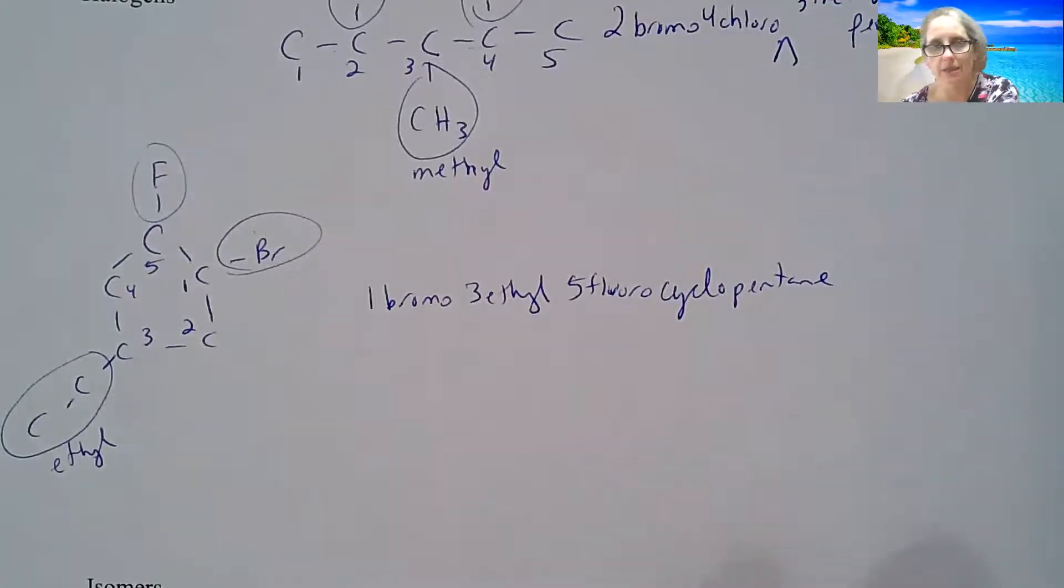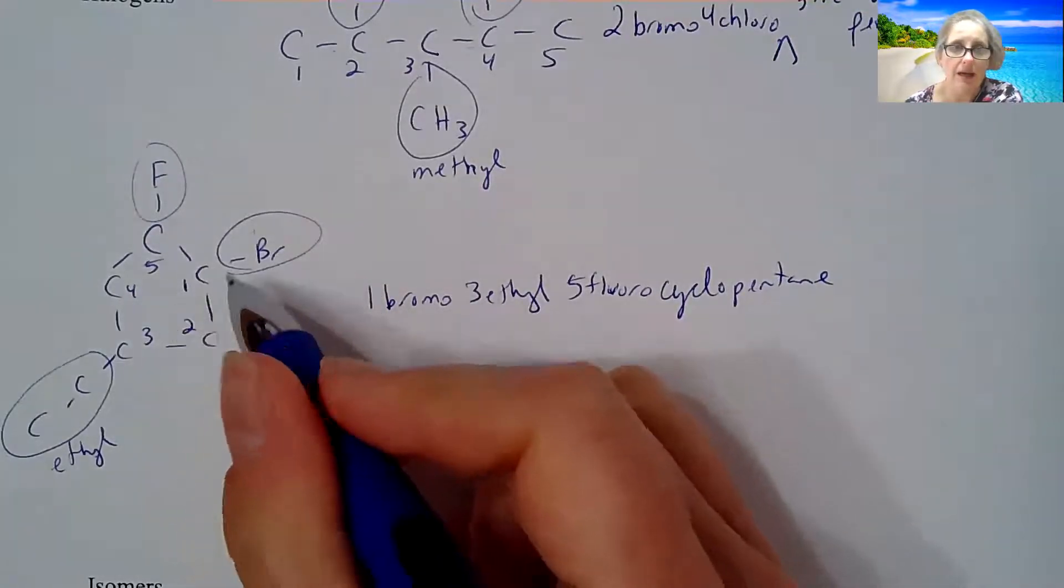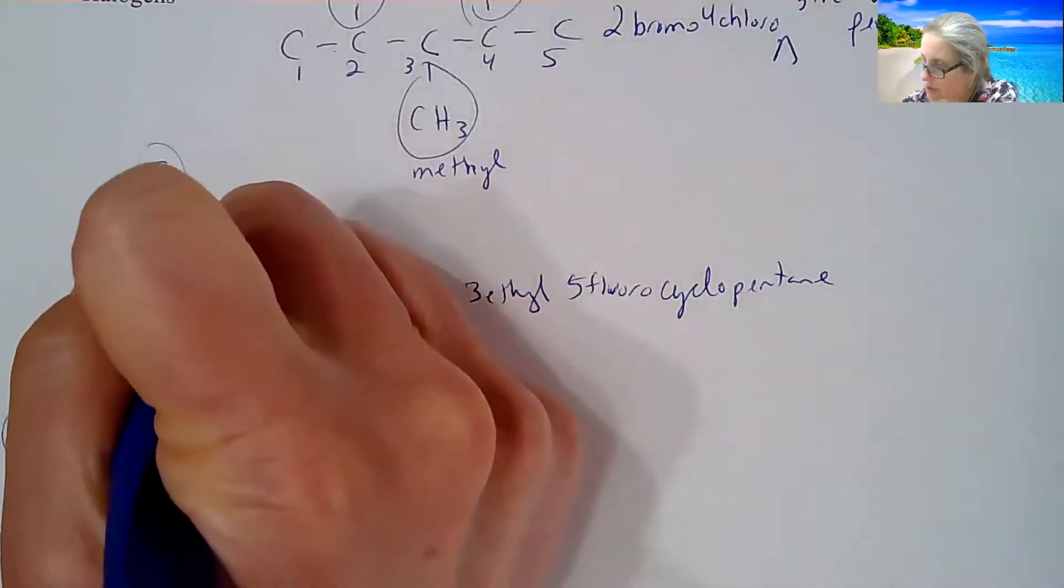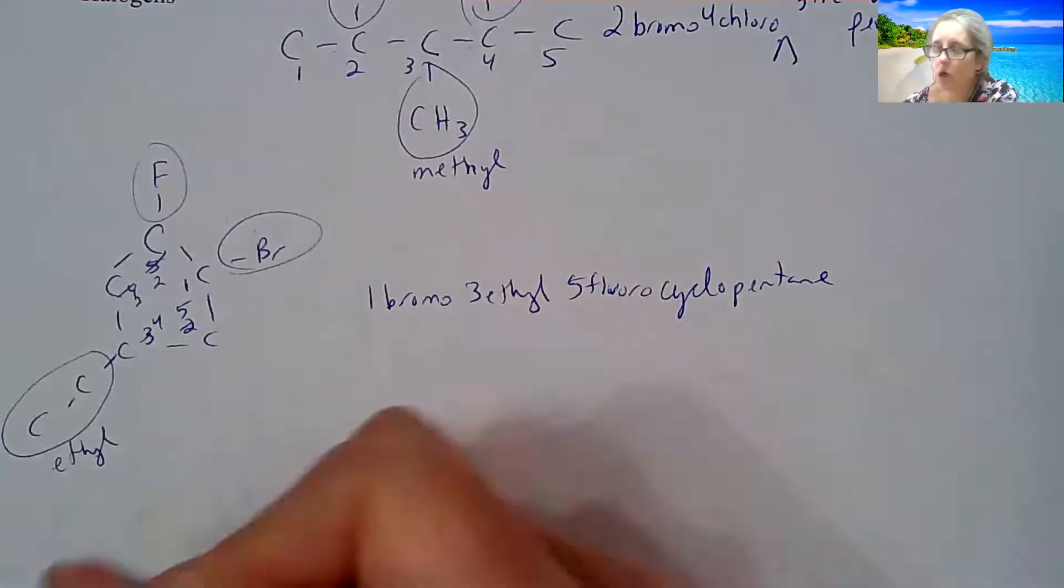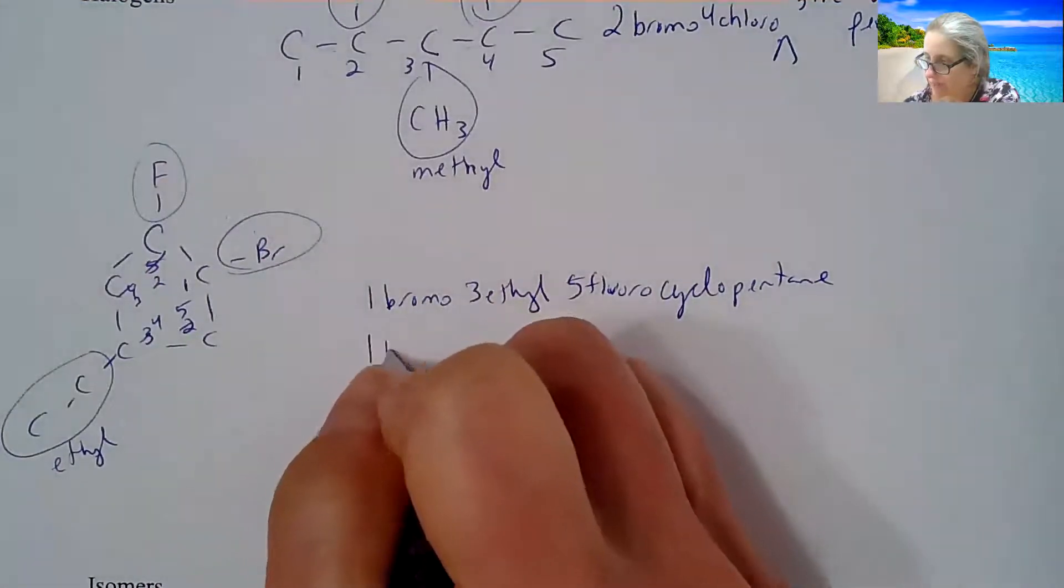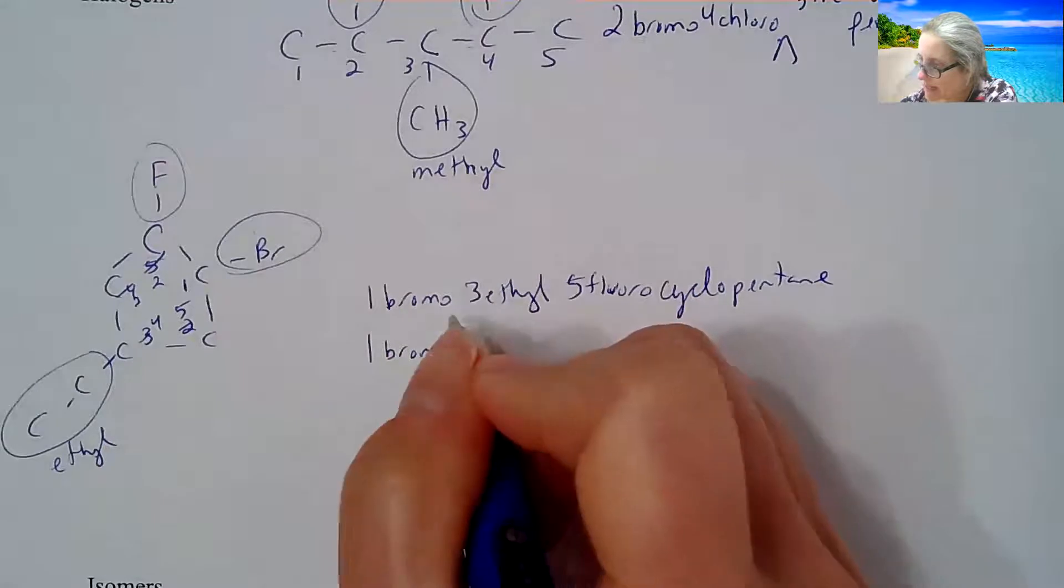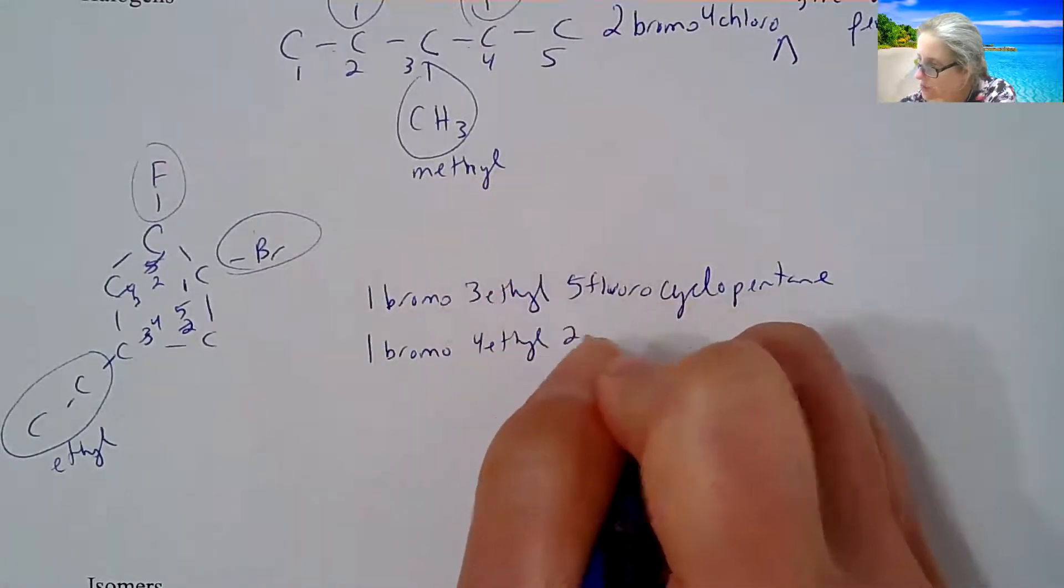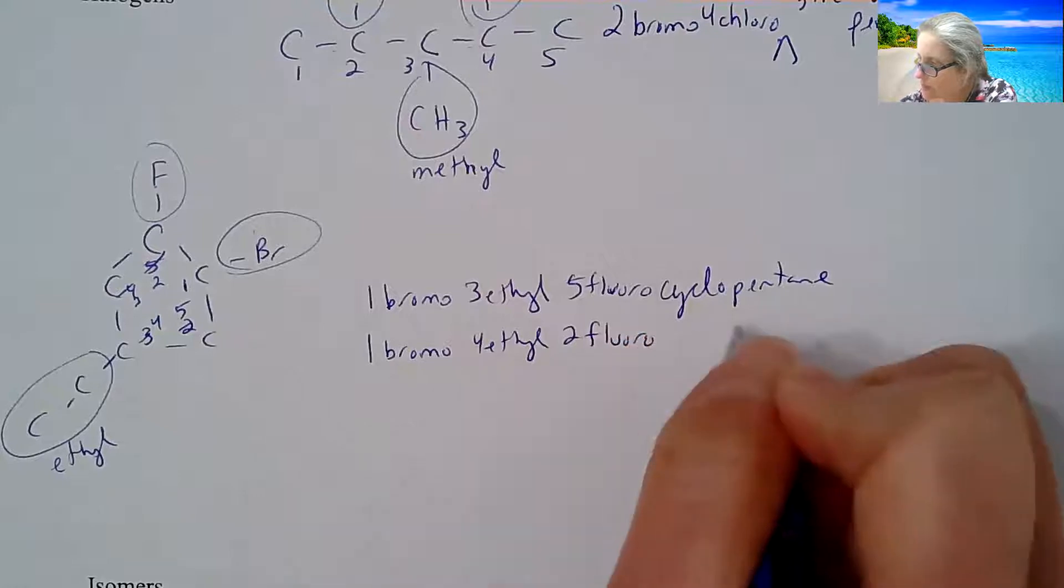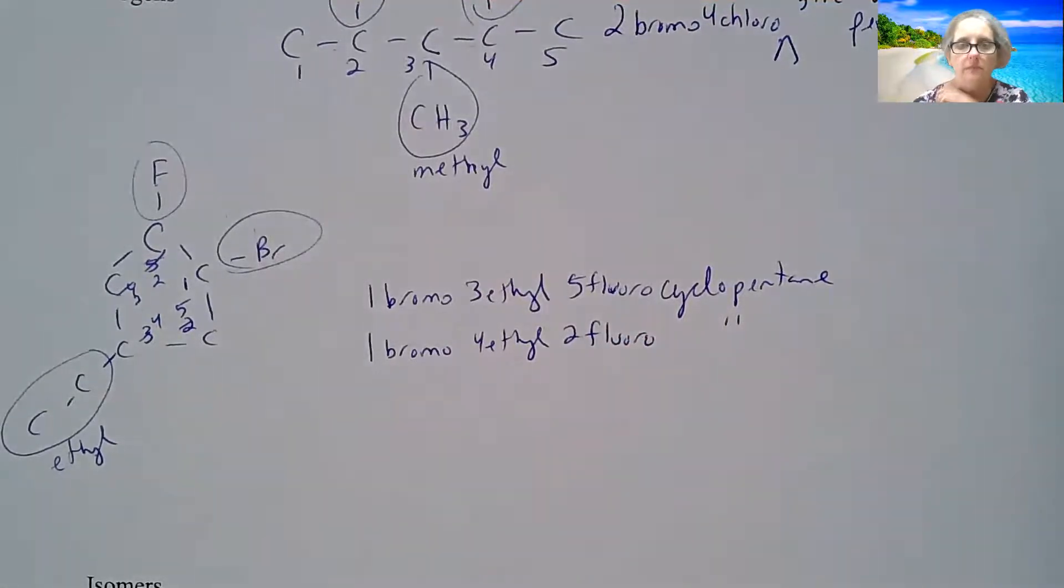Well, actually, you want to consider, if I named it the other way, meaning this becomes a two, this is a three, that's a four, that's a five, what would that naming system be? So that's a 1-bromo, that would be a 4-ethyl, and then that would be a 2-fluoro cyclopentane.